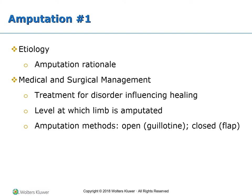An amputation may be performed using an open or closed method. In an open, or guillotine amputation, the end of the residual limb is temporarily open with no skin covering it. In the more common closed amputation, called the flap amputation, skin flaps cover the severed bone's end.